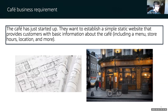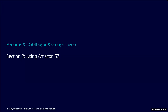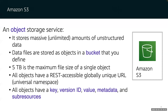Amazon S3 is an object storage service. It enables you to store a virtually unlimited amount of data, and data files are stored as objects. You place objects in a bucket which you define and create. Every bucket must have a name that is globally unique across all regions — not only in that region but in all regions. Objects can vary in size from 0 bytes to 5 terabytes.